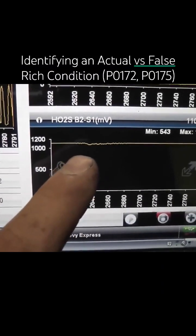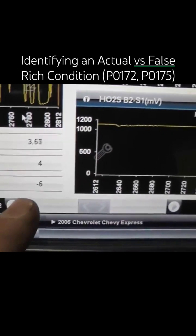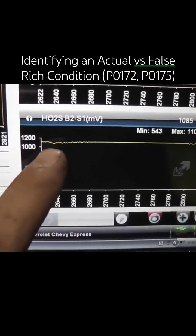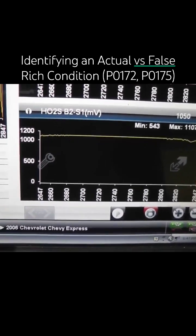Is this oxygen sensor reporting an actual rich condition, which would make sense that the computer's taking all the fuel away, or is this reporting a false rich and the computer's taking fuel away needlessly?